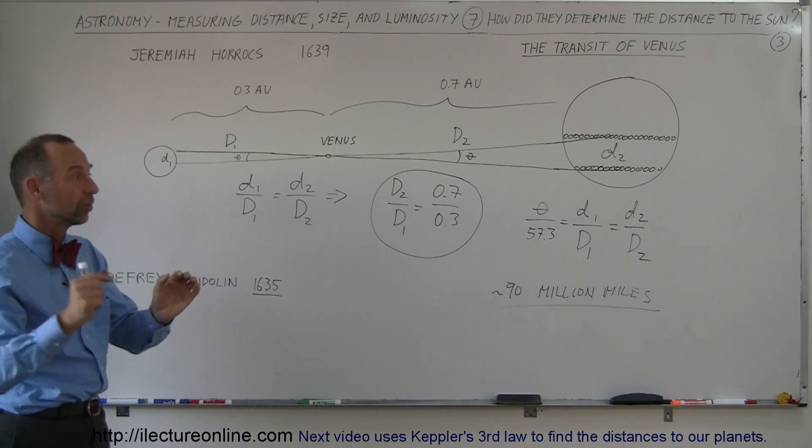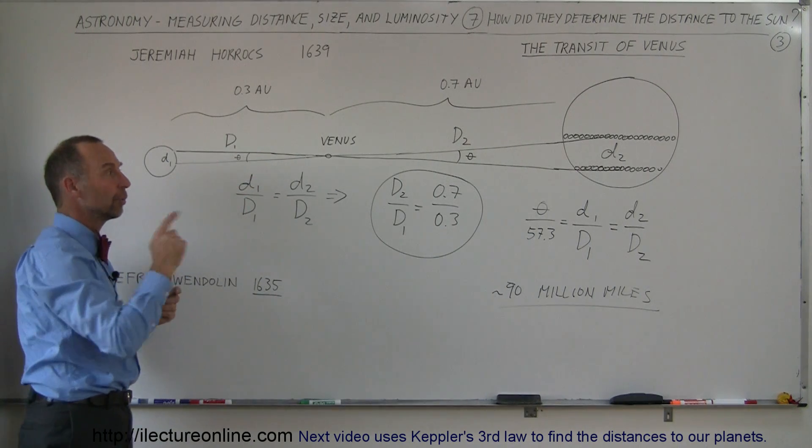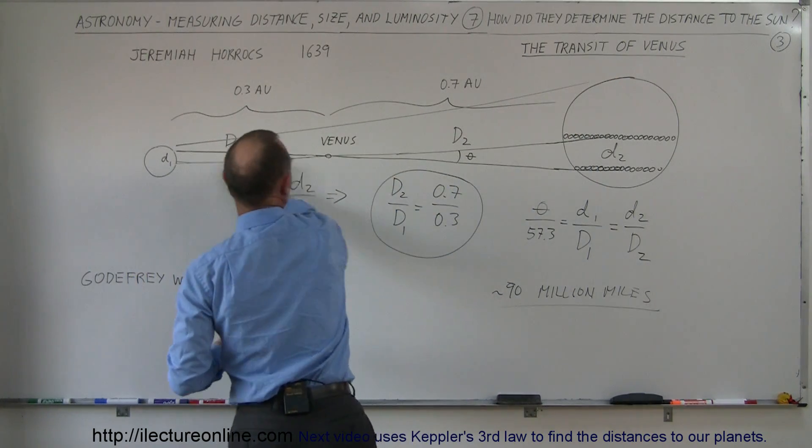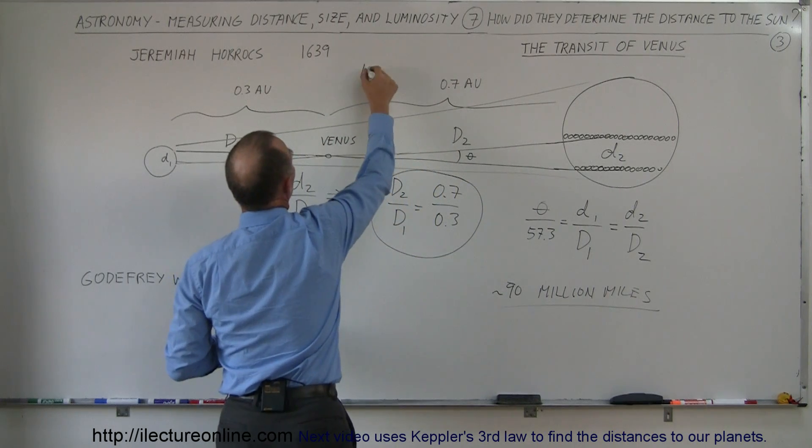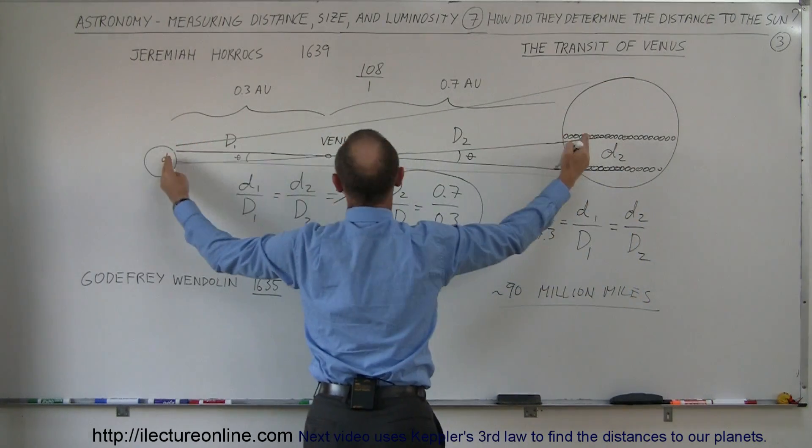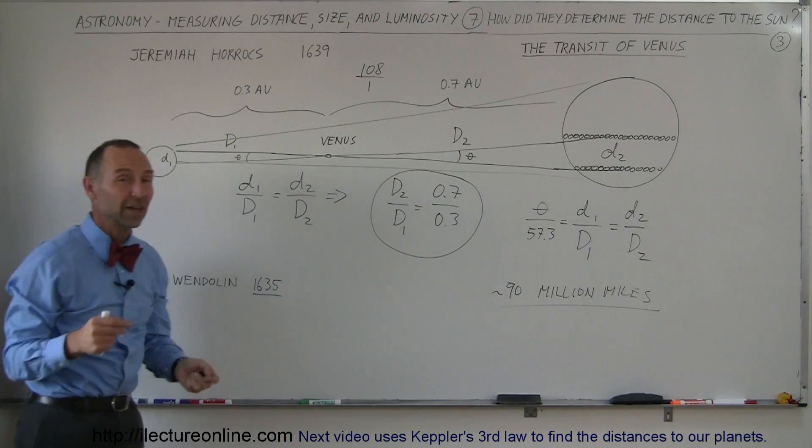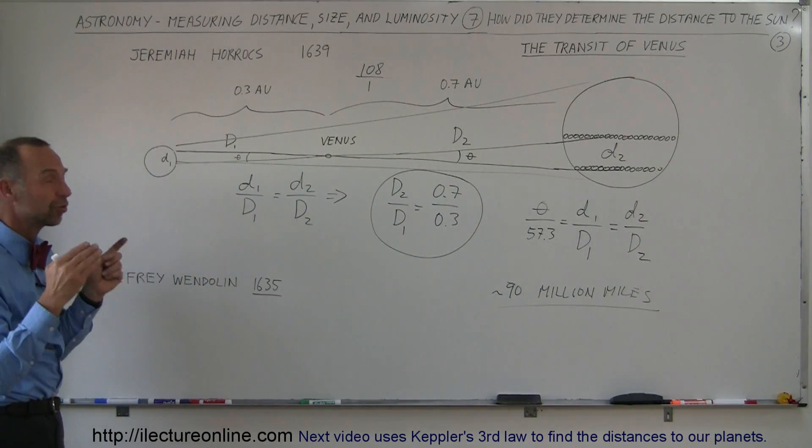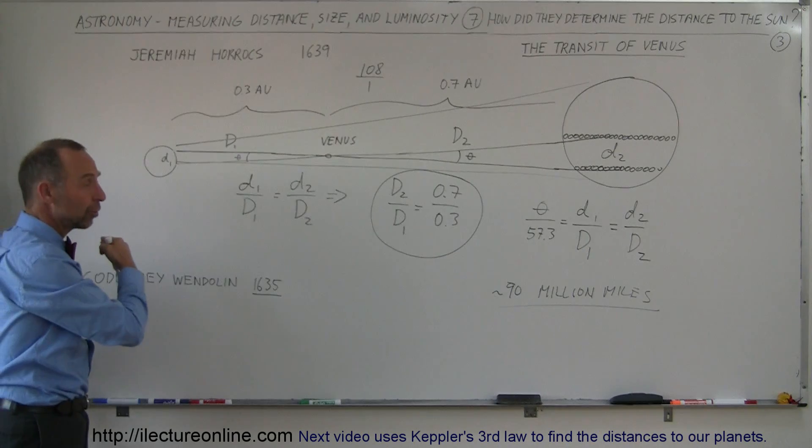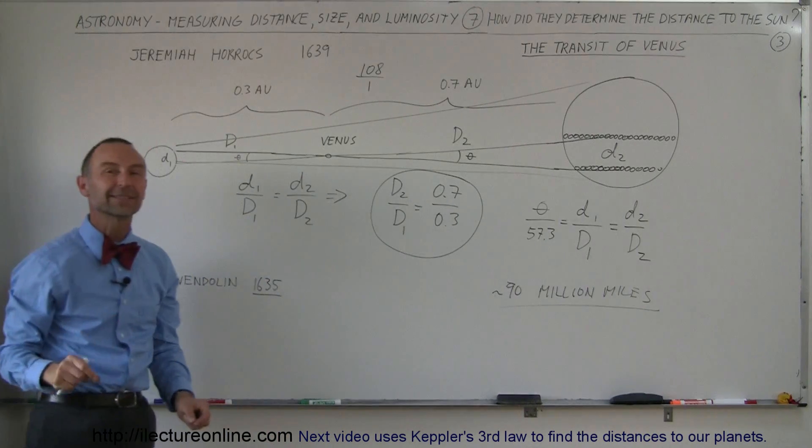Of course once they knew the distance to the Sun, by using this angle of parallax or by using the angle between the Earth and the Sun, blocking out a ratio of 101:2. So this angle right here had a ratio of 108 to 1, meaning that the diameter of the Sun had to be 1/108th the distance. So once they knew the distance they knew the diameter, and once they knew the diameter they realized that the Sun has a diameter about 100 times, or slightly over 100 times the diameter of the Earth. So now they finally knew how big the Sun was. They knew the Sun was over 90 million miles from the Earth, and they knew that the Earth would fit into the Sun more than a million times.